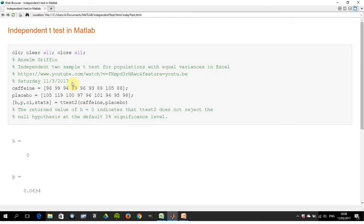So I created two separate arrays: there's the caffeine and there's the placebo. They're both one row by nine columns. The command in MATLAB is ttest2. It doesn't matter which is first and which is second. Then we have these four possible returned values, so let's look at them one at a time.